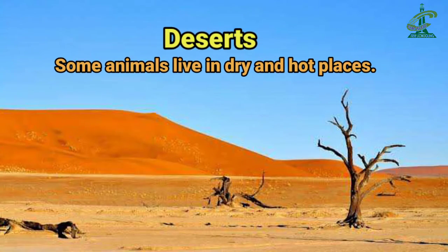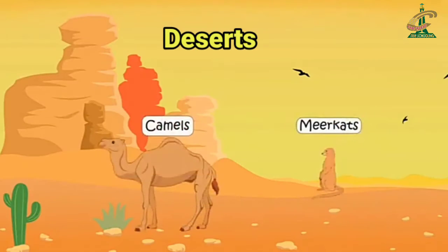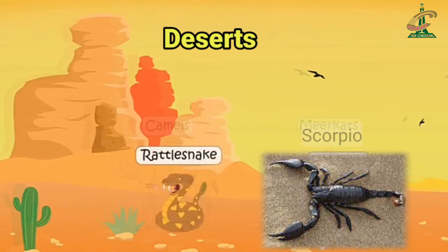Some animals live in dry and hot places, اور ان dry and hot places کو ہم deserts کہتے ہیں۔ Some examples of desert animals are camels, meerkats, rattlesnake, scorpion, etc. تو desert ان کی habitat کہلائے گی۔